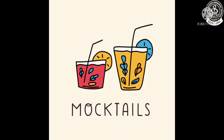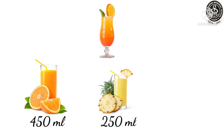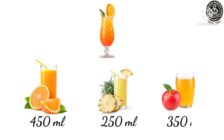After that, she wants to serve them with mocktail. So children, how to make a mocktail? For that, Samaira had mixed 450 ml of orange juice, 250 ml of pineapple juice and 350 ml of apple juice. Using these juices, she made mocktail and served to her friends.